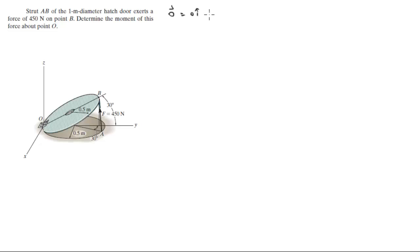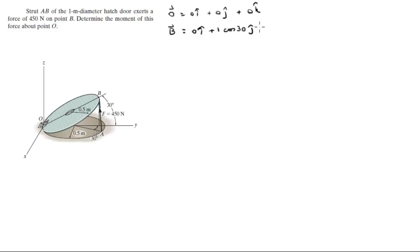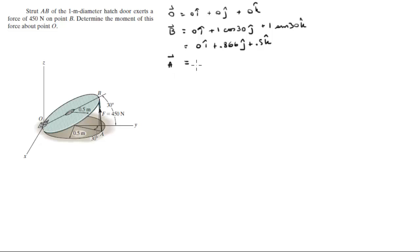Let's find the points involved. O is at the origin: 0i + 0j + 0k. B is at 0 in the I, and it sits in the YZ plane. It has 1·cos(30°) in the J because the door is open at 30 degrees, and a diameter of 1. Then 1·sin(30°) in the K, completing the right triangle. So B = 0i + 0.866j + 0.5k.